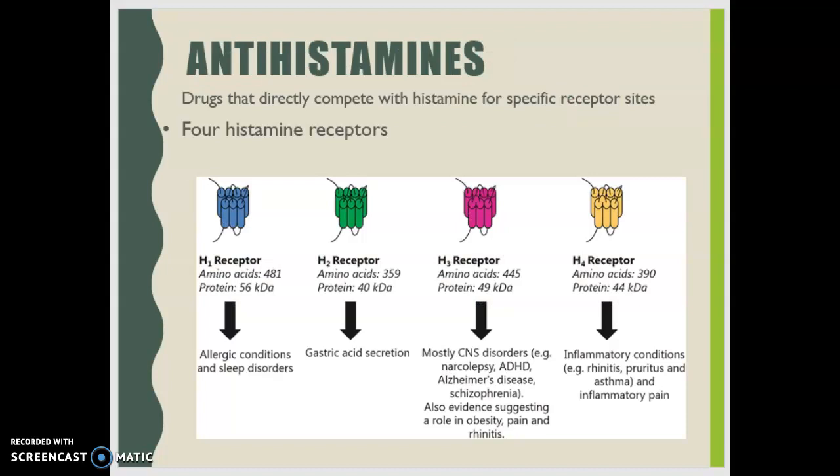Now let's talk about antihistamines. These are drugs that directly compete with histamine for specific receptor sites. We know there are four histamine receptors. The H1 receptor is activated with allergic conditions and sleep disorders — that's the one we see with upper respiratory infections and common cold symptoms. The H2 receptors are responsible for gastric acid secretion. The H3 receptors are mostly activated in central nervous system disorders like narcolepsy, ADHD, and Alzheimer's disease, with some evidence of a role in obesity, pain, and rhinitis. The H4 receptors are our newest discovery and are involved with inflammatory conditions including rhinitis, pruritus, and asthma, as well as inflammatory pain.